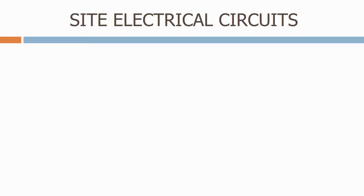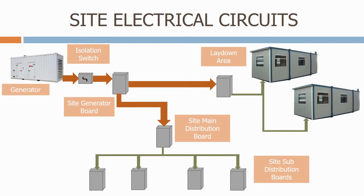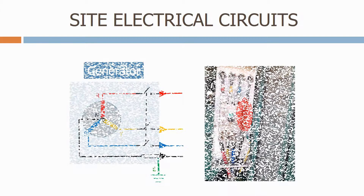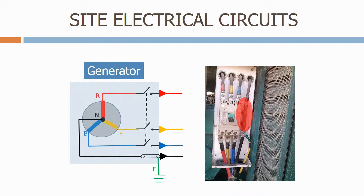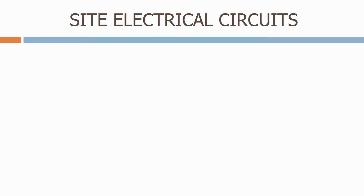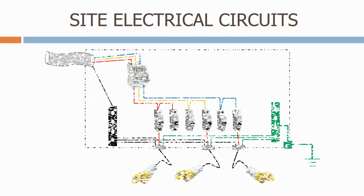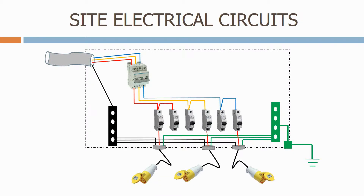In the next section, we look at site electrical circuits. We start by describing a typical electrical system on site, containing a generator, a lay down area, and a distribution system. We then look at all the individual elements separately, starting with how we connect a generator, and finishing with a site distribution board.